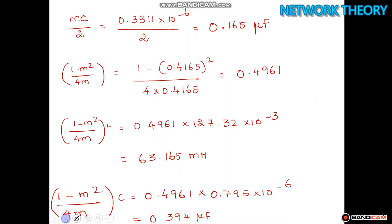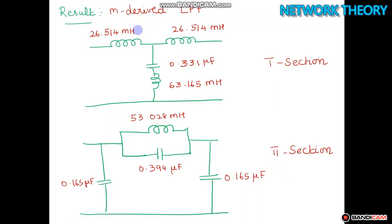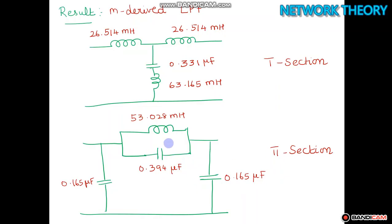The final result: for the M-derived low-pass filter T section, the series arms each have mL/2 = 26.514 mH, the shunt arm has mC and (1 - m²/4m)·L = 63.165 mH. For the pi section, the shunt arms each have mC/2 = 0.165 μF, and the series arm has mL and (1 - m²/4m)·C = 0.3964 μF. This completes the design of the M-derived low-pass filter T and pi sections.